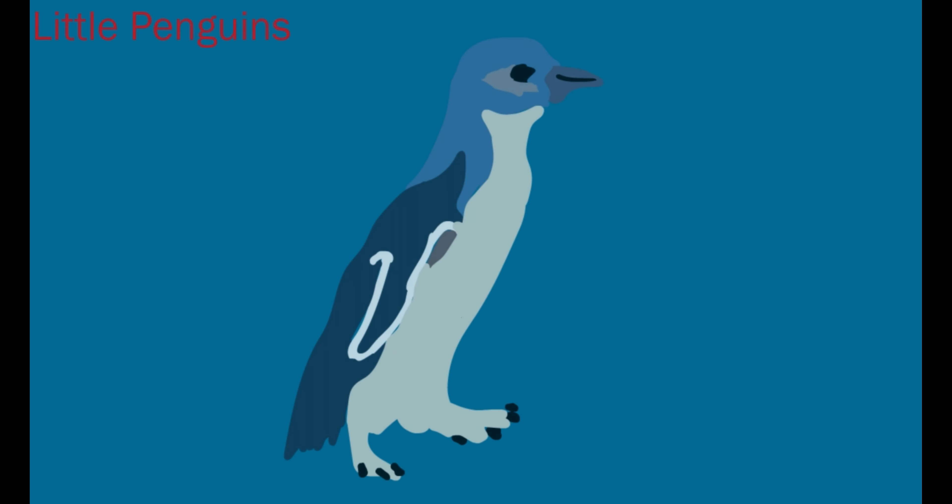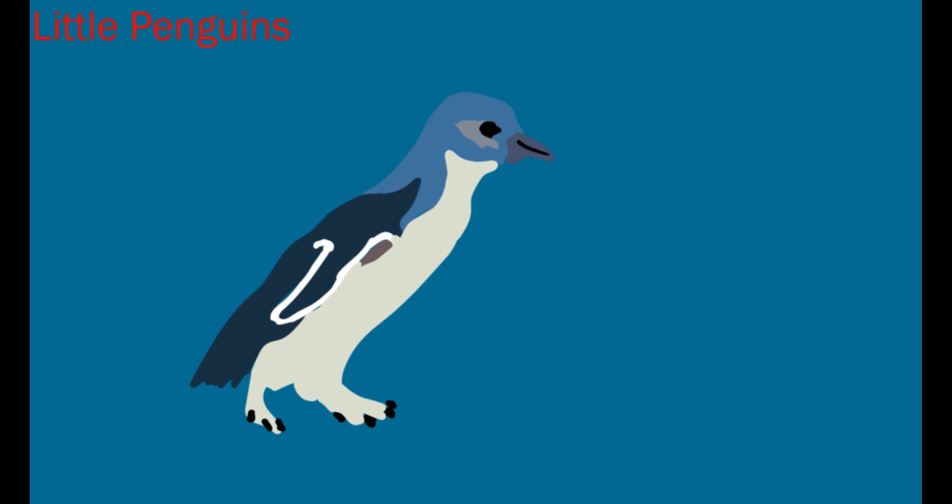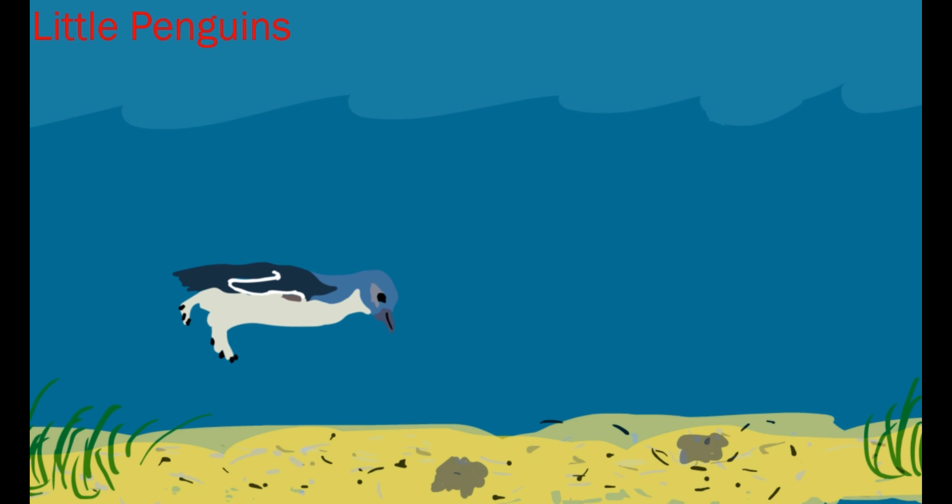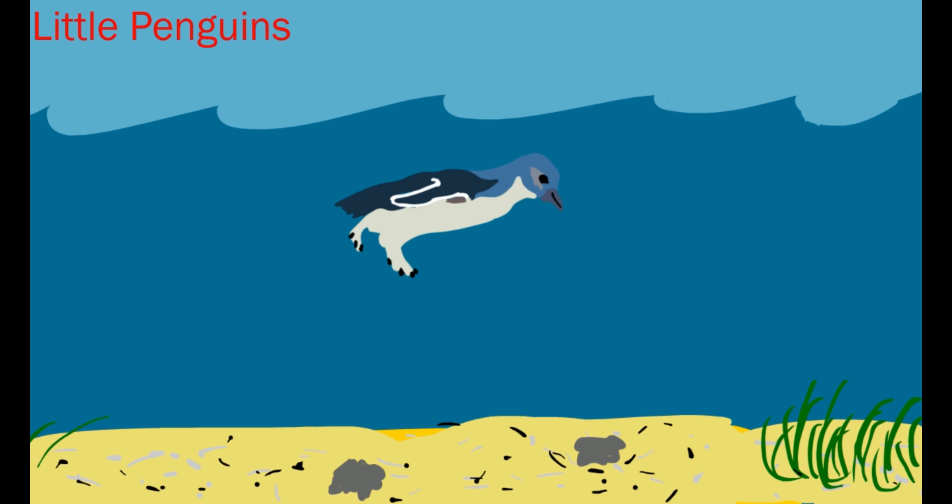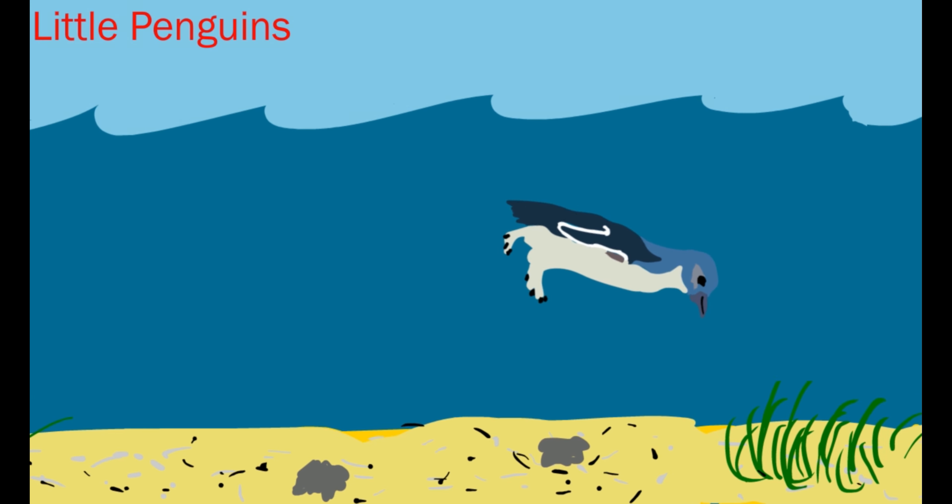Another famous bird in Port Phillip Bay is the little penguin. They are about 30 centimeters tall and are the world's smallest penguin. They mostly eat smaller fish, like mackerel, anchovy, and arrow squid. They raise their families on the shore but spend most of their lives in the water.